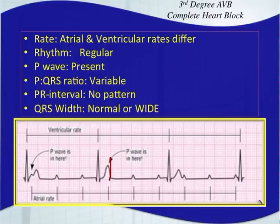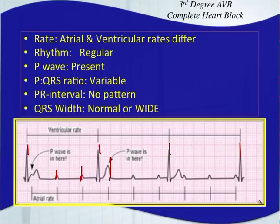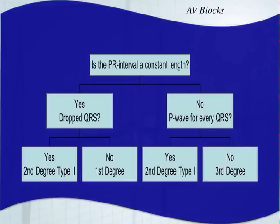Third degree AV block is sometimes called a complete heart block. Both the atrial rhythm and the ventricular rhythm will be regular, but they are not associated with one another. Even if you see a P wave before a QRS complex, that is just coincidence — it's just continuing throughout its own pattern. There is no consistent PR interval; there's no pattern to it.